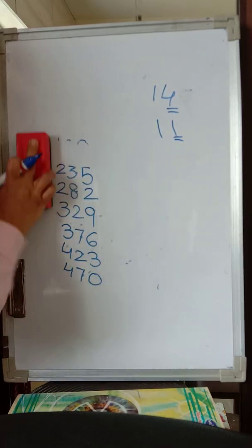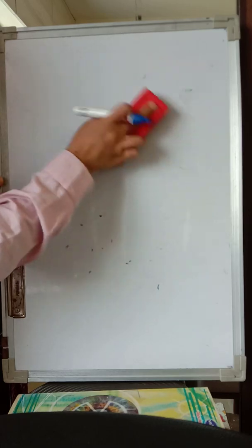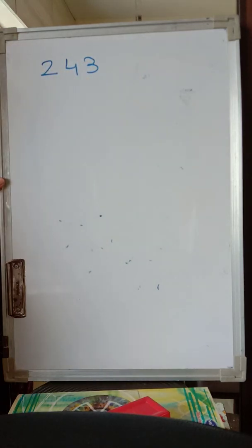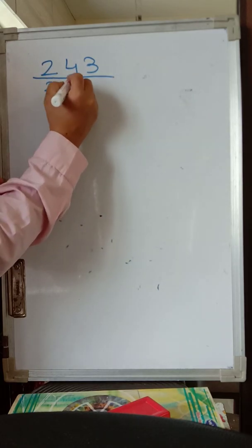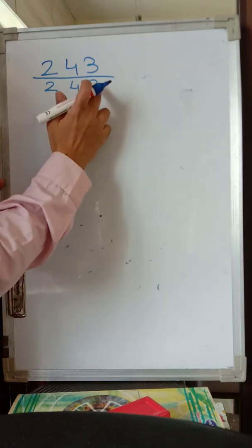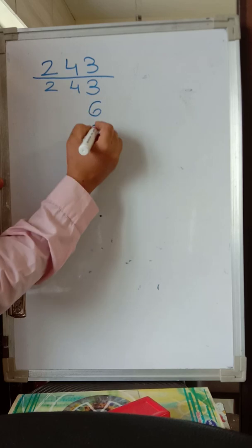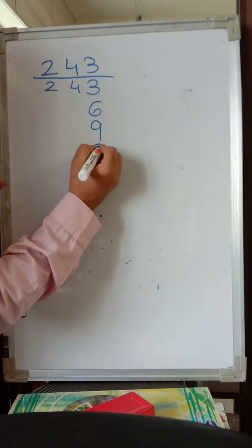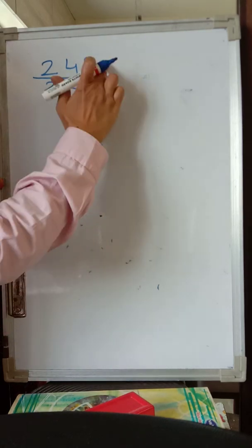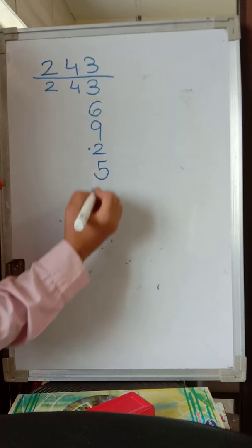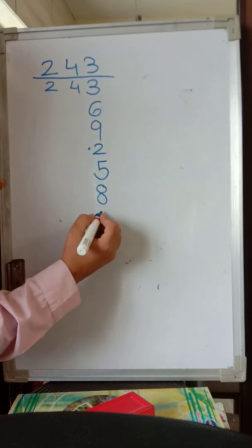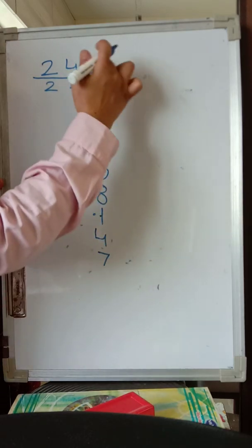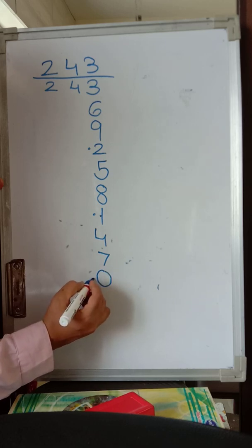Now let us go for a 3-digit number. If you are quick with addition, within a minute you will be able to do this. Let us take any 3-digit number — for example, 243. Let us make the table of 243. Write again 2, 4, and 3. Now for the ones column: 3 plus 3 is 6, 6 plus 3 is 9, 9 plus 3 is 12 — write only 2 and give a cleanser. 2 plus 3 is 5, 5 plus 3 is 8, 8 plus 3 is 11 — write 1 and give dot. 1 plus 3 is 4, 4 plus 3 is 7, 7 plus 3 is 10 — write 0 and cleanser.